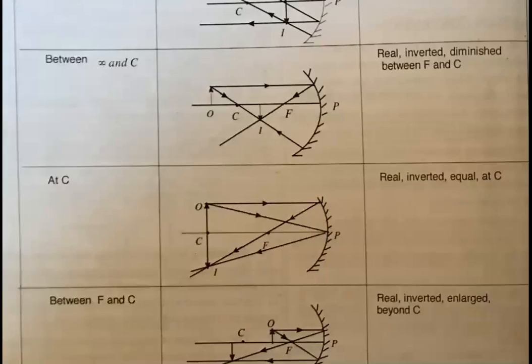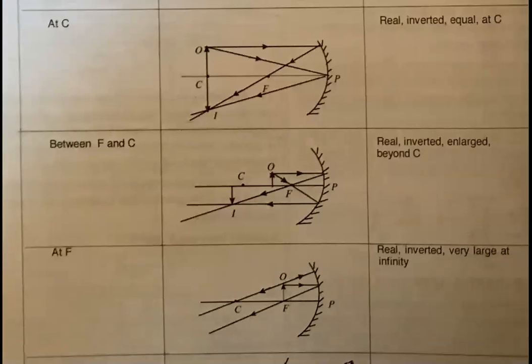If the object is located at C, the image also forms at C. The ray parallel to the principal axis reflects through focus, and the ray striking the pole reflects symmetrically. These two rays meet at C, and since the height of the object and image are the same, the image is real, inverted, and of the same size.